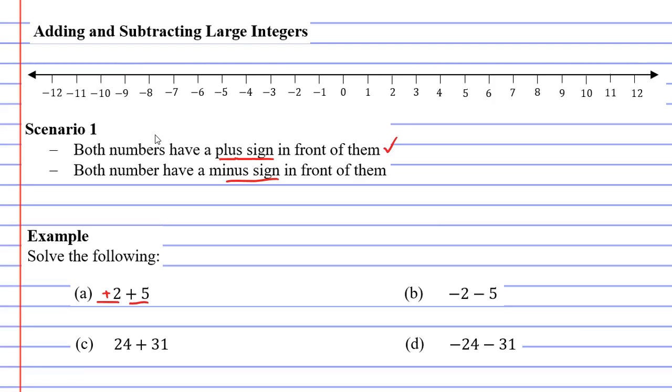In example B, you will notice that both numbers have a minus sign in front of them, so that fulfills dot point two. So what we're going to do is we're going to solve questions A and B using the number line and we're going to observe what happens.